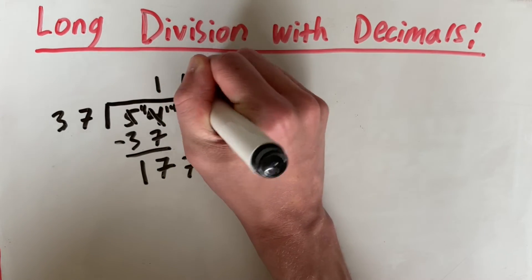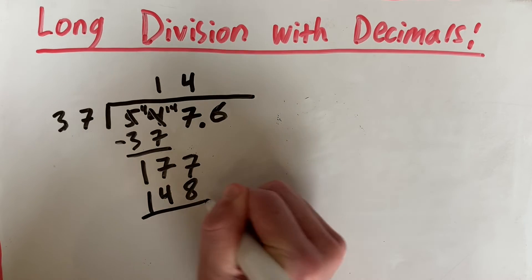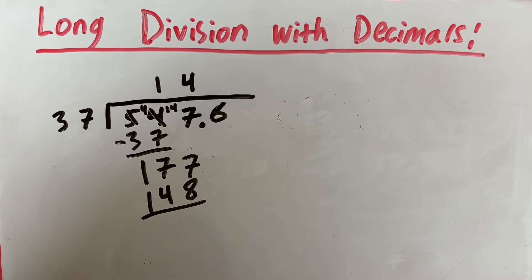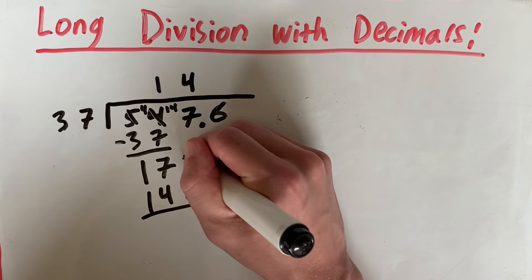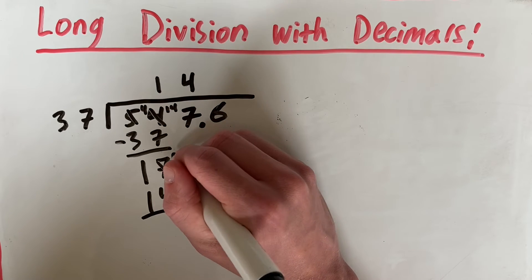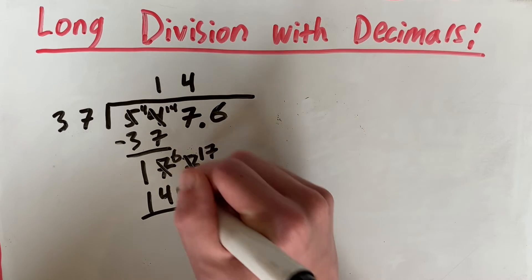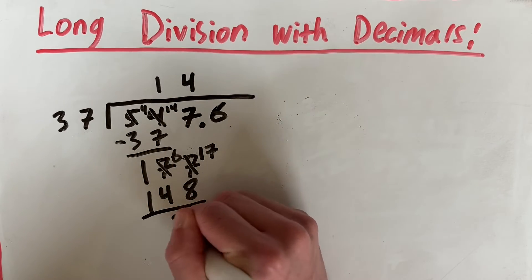So we'll write 4 up here. And as we just worked out, 4 times 37 is 148. So now we have 177 minus 148. 7 can't be subtracted by 8 because it will be negative. So that becomes 17. And we take 1 from 7 to get 6. So 17 minus 8 is 9. And 6 minus 4 is 2.